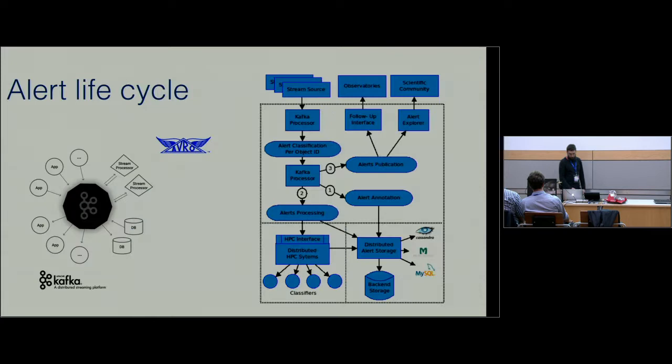How does the alert lifecycle work? This is all working on Avro packages, which are distributed through Kafka. You connect to the distributed streaming from Kafka, then we process everything and distribute everything again through a Kafka distribution system. We're connected to the stream source here, that goes through the Kafka processor. The processor sends alerts to an annotation pipeline which goes to distributed alert storage, the alert processing connected to the HPC interface, and the alerts publication connected to observatories or the scientific community.